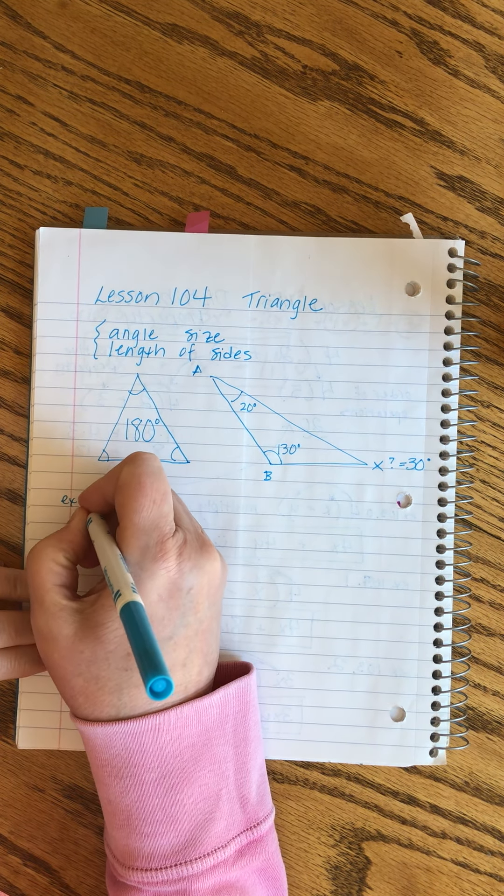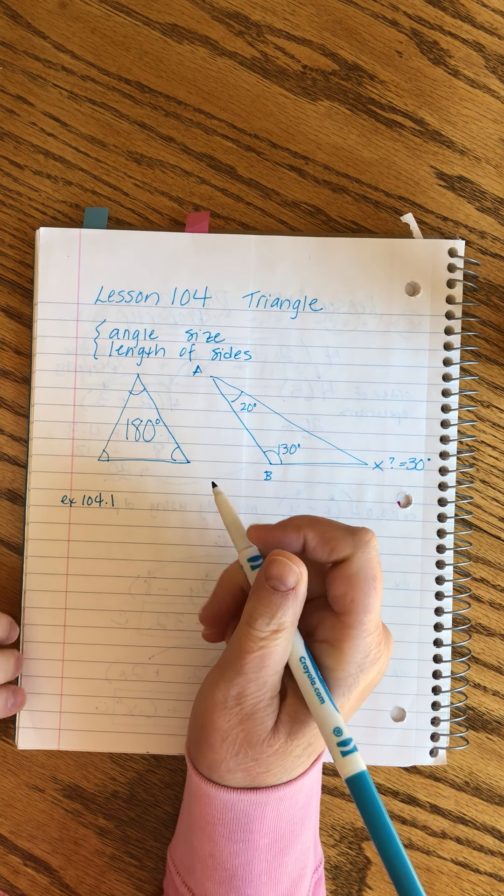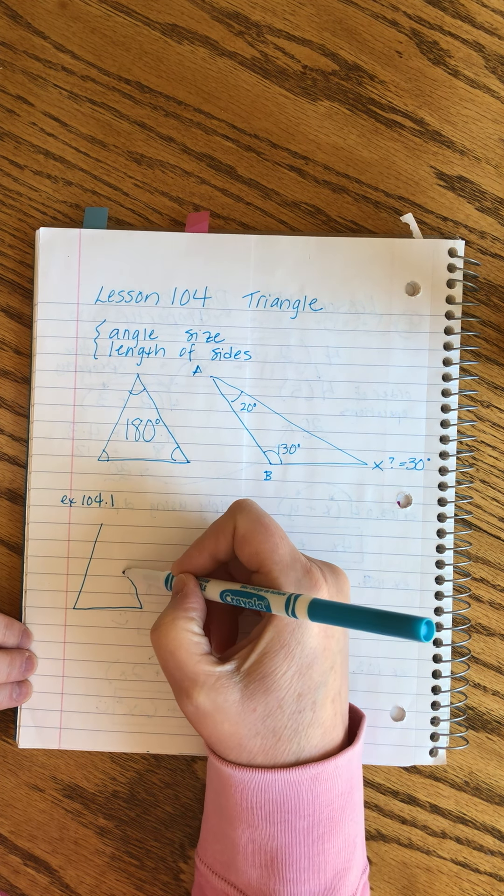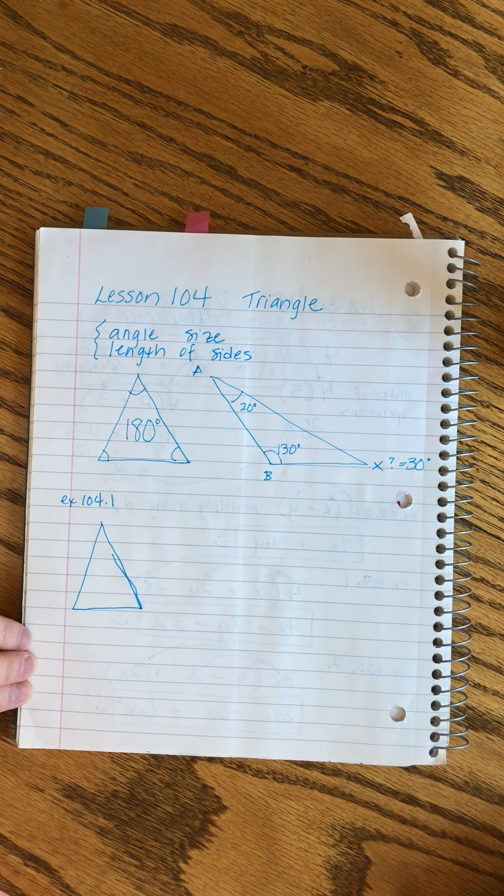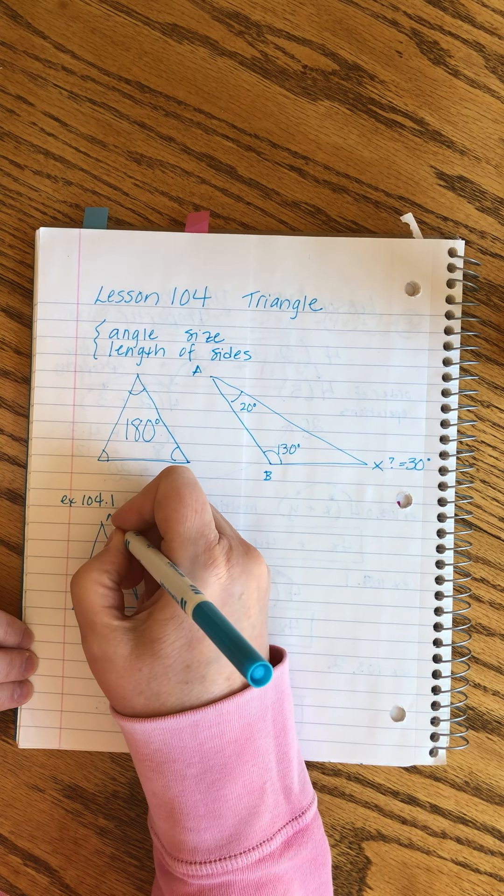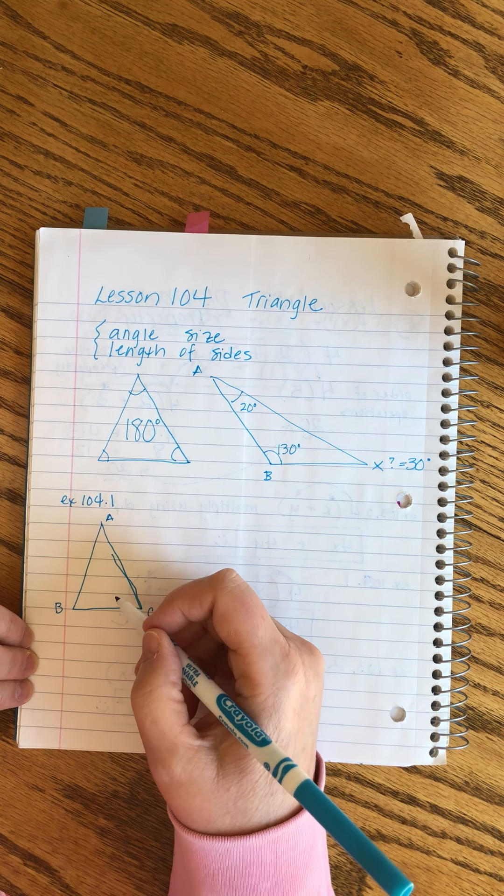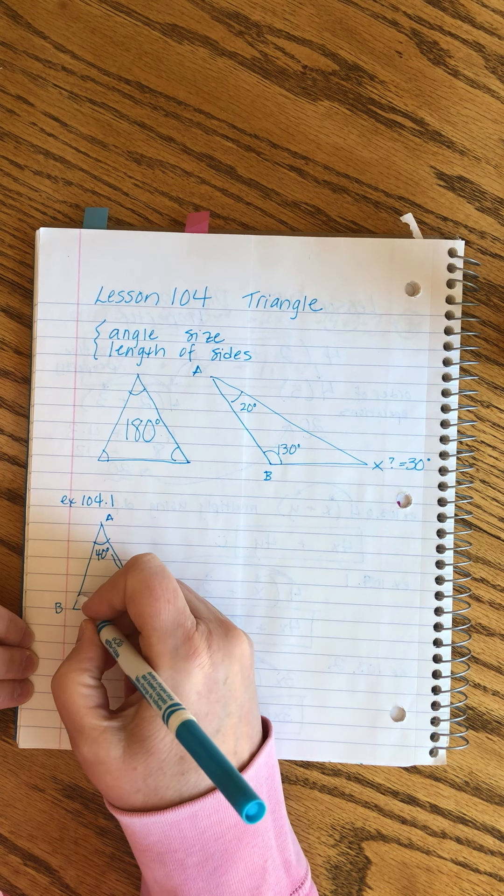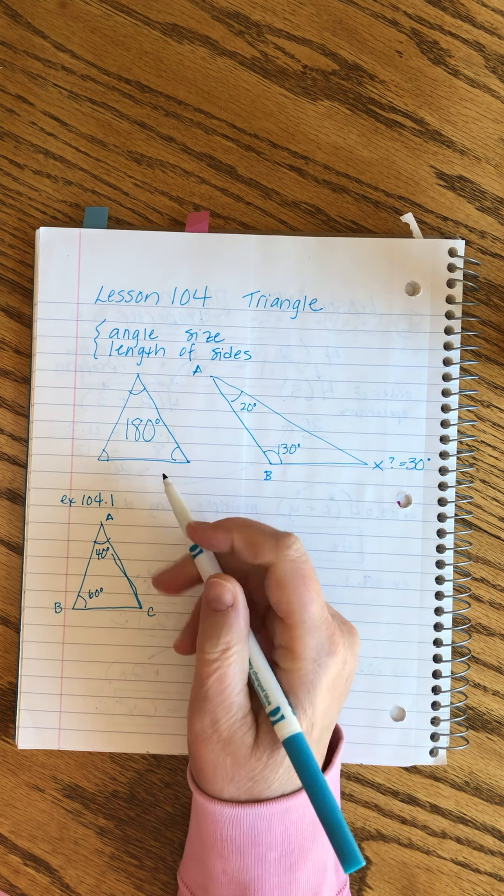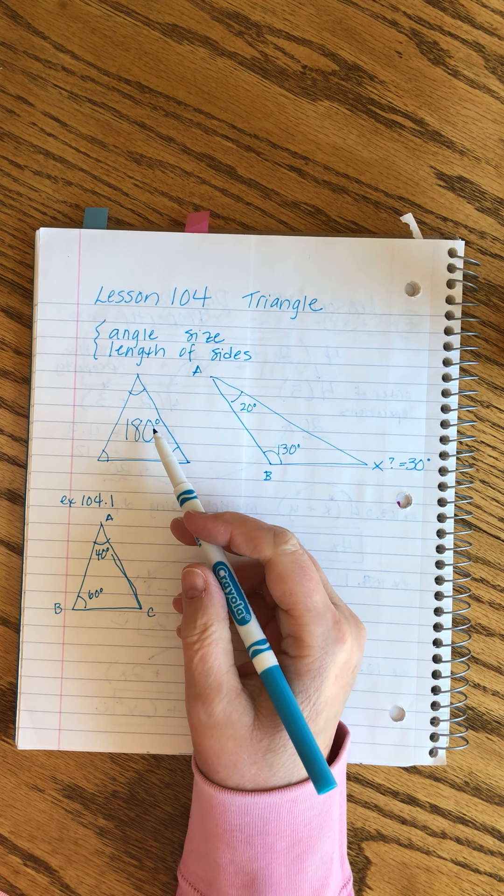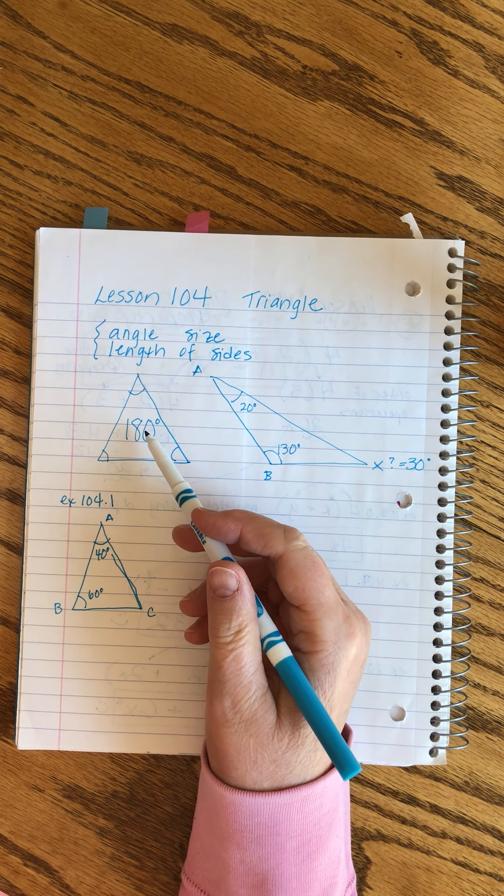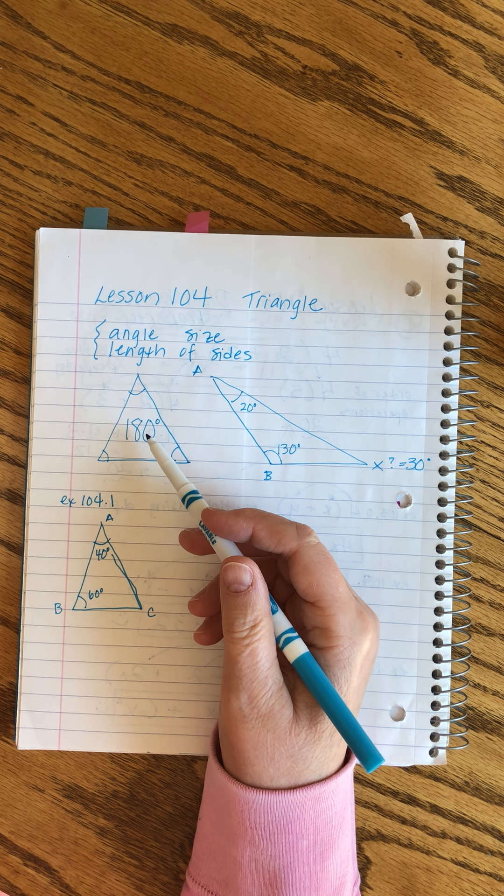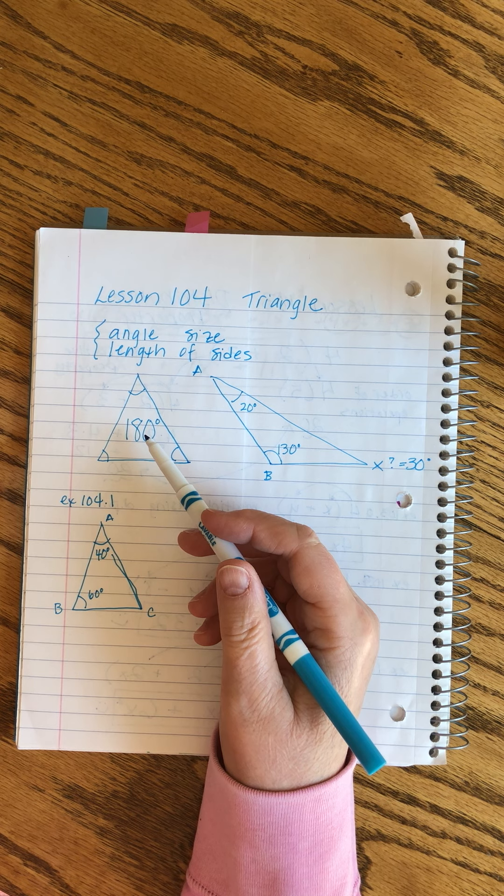Let's look at a couple more of these. Example 104.1. I do recommend that you do a quick sketch of these when you're doing the homework - it gives your brain a little break from the numbers and it helps you notice what's going on in the triangle. Angle A we find out is 40 degrees and B is 60 degrees.